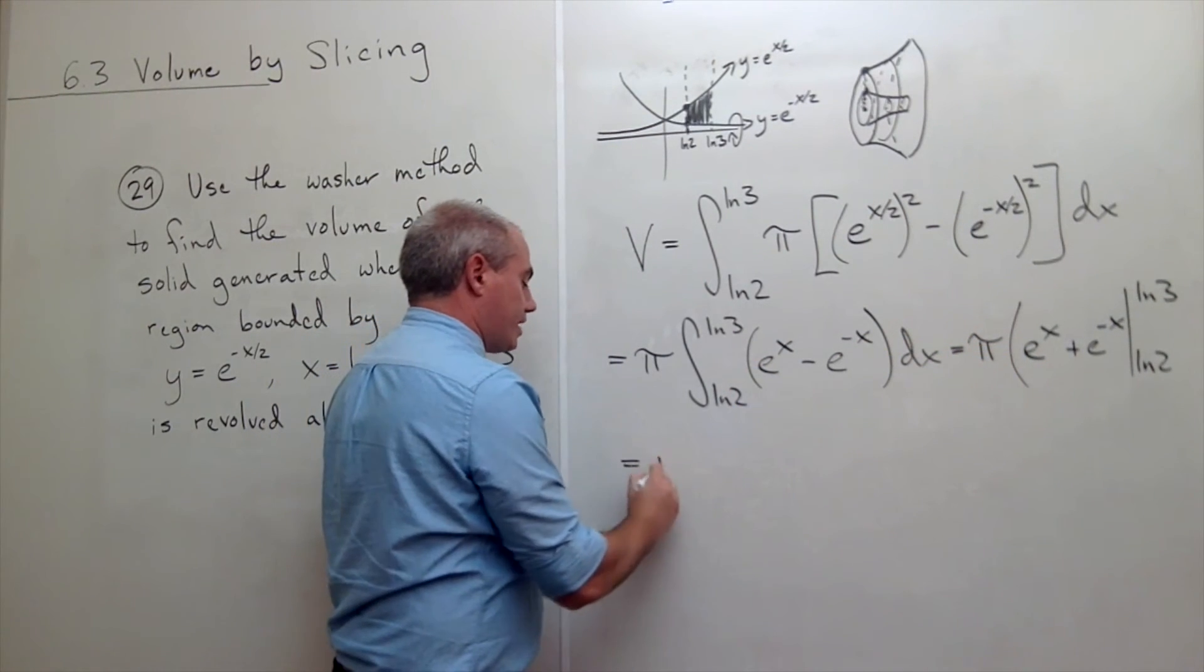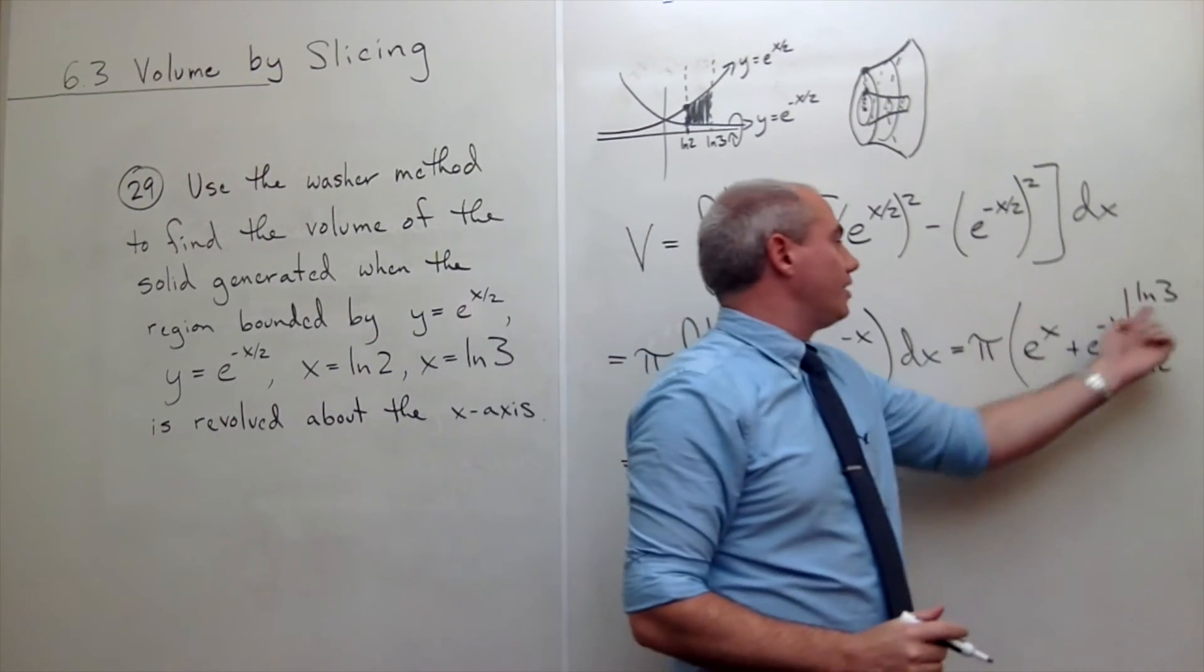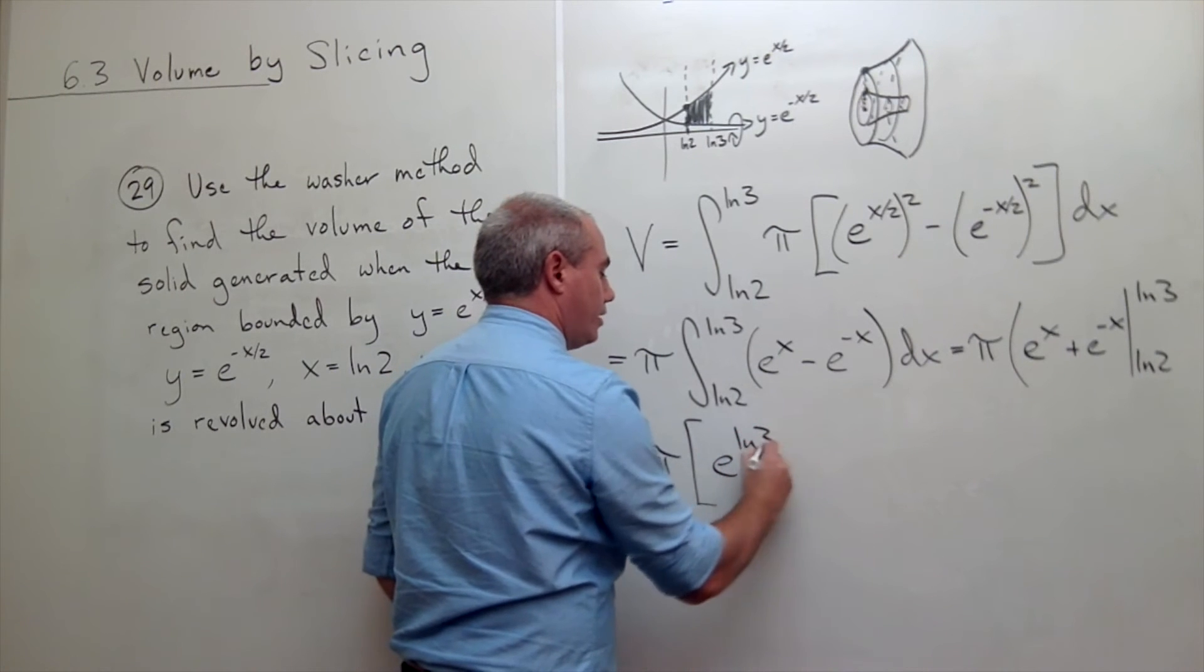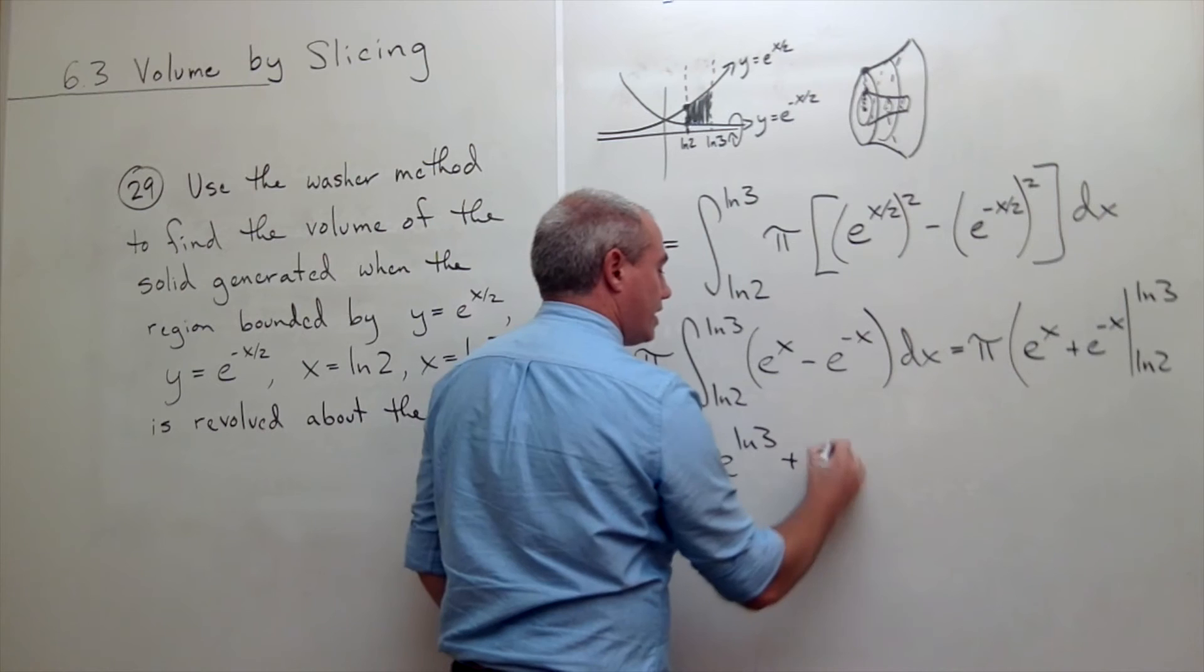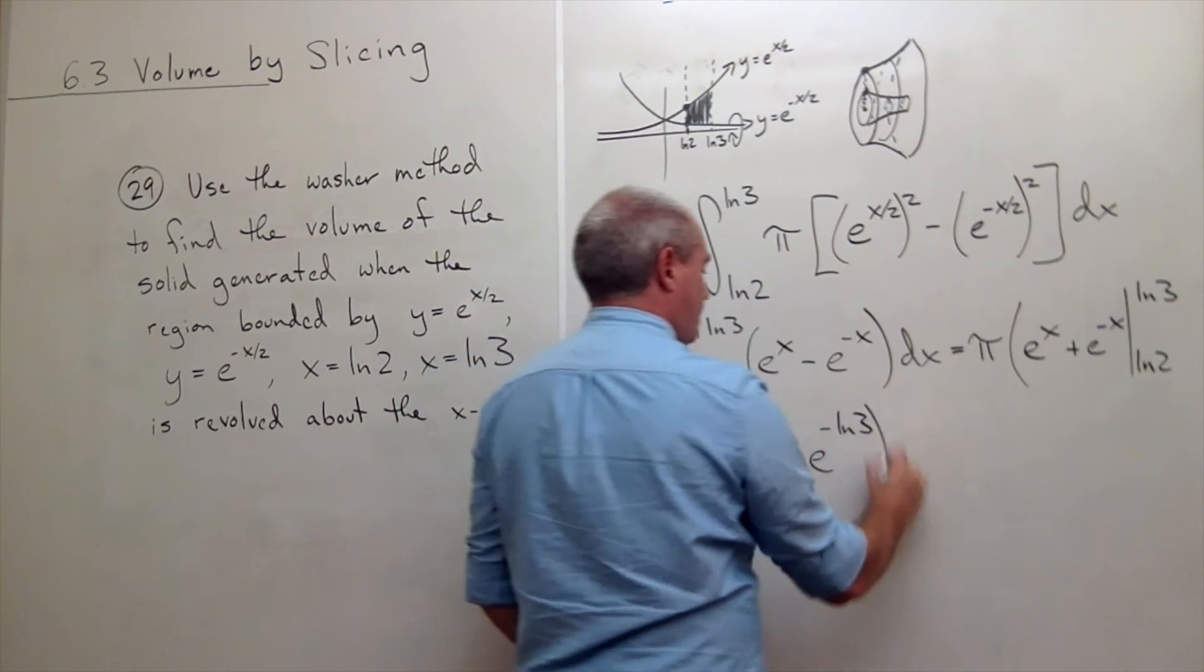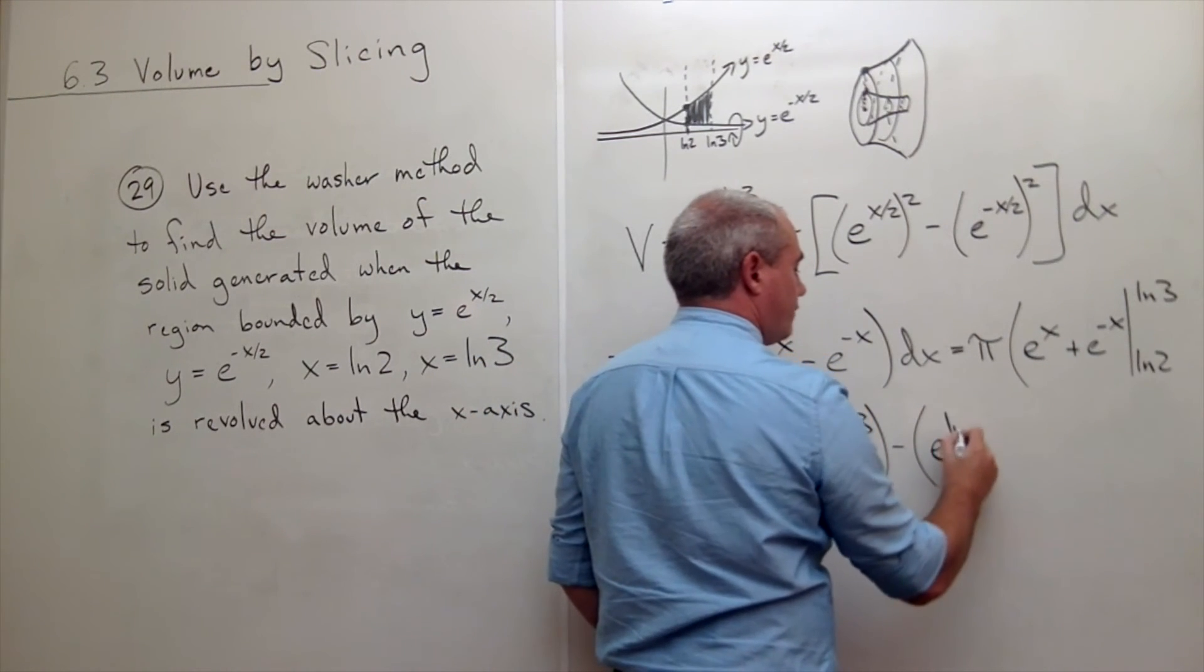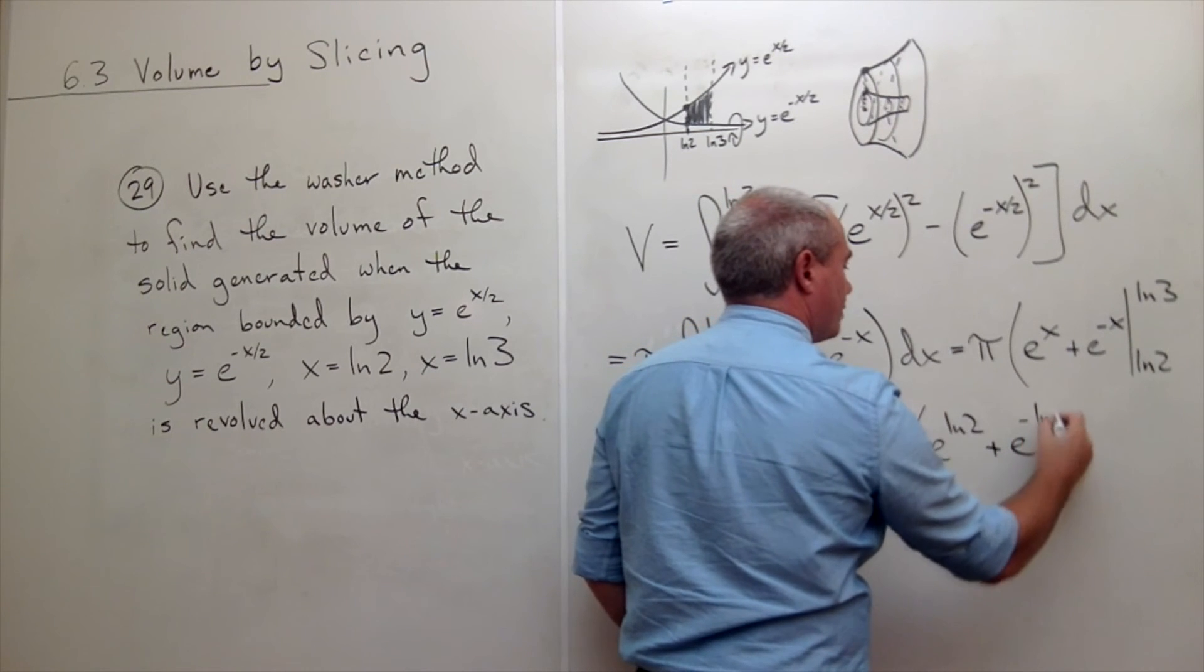Alright, let's plug some things in. I still have my pi. But if I plug in ln of 3, I get e to the ln of 3 plus e to the negative ln of 3 minus, plug in ln of 2 and I get e to the ln of 2 plus e to the negative ln of 2.